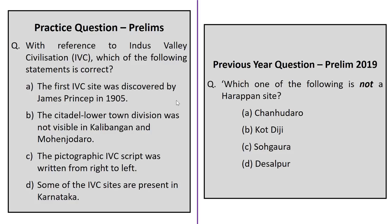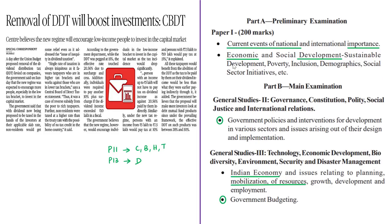That concludes the discussion on the Rakigadi news article, covering the Indus Valley Civilization, its features, and how it ended. Moving on to the next discussion about dividend distribution tax — in the union budget of 2020-21, the finance minister recommended abolishing the dividend distribution tax, a move expected to boost investment in India.